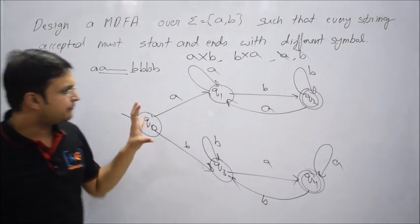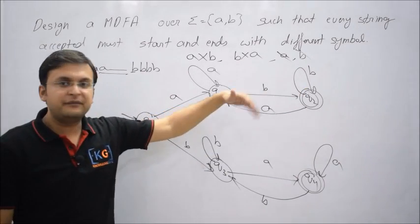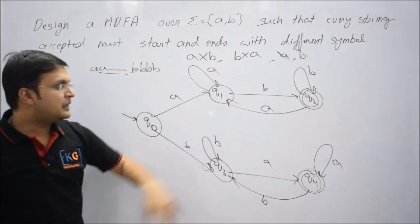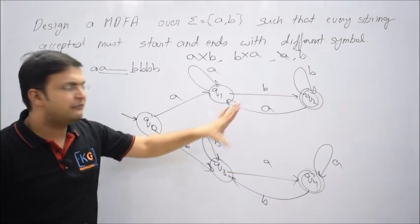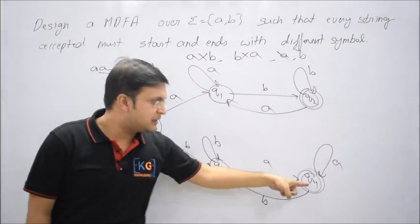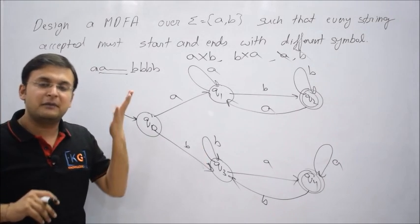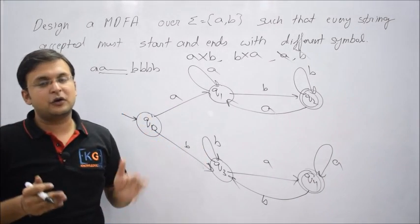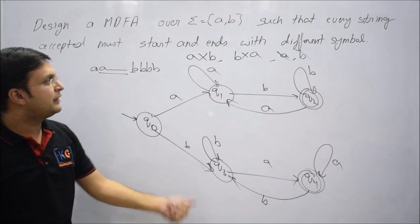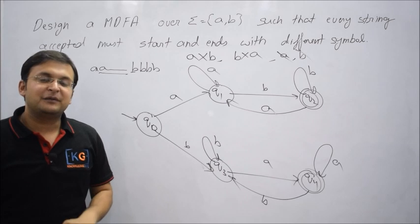You might ask why more than one final state is required. The two final states have exactly opposite behaviors: one supports B loops but returns on A, while the other supports A loops but returns on B. If you combine them, the machine gets confused about which symbol to loop on and which to go back on. So the final optimal machine has five states and two final states, accepting all strings that start and end with a different symbol. Thank you.